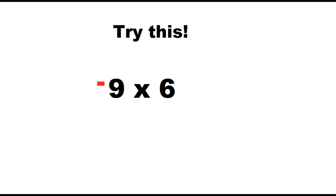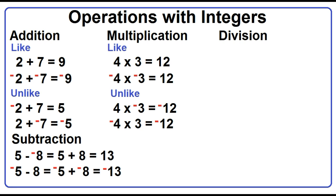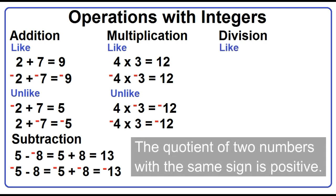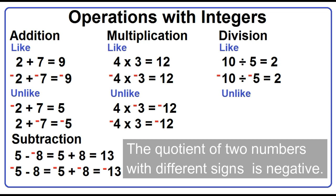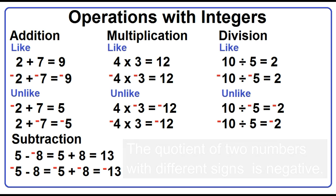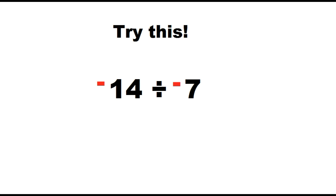Try this: negative 9 times 6. Division: the quotient of two numbers with the same sign is positive. Example: 10 divided by 5 is 2. Negative 10 divided by negative 5 is 2. The quotient of two numbers with different signs is negative. Example: 10 divided by negative 5 is negative 2. Negative 10 divided by 5 is negative 2. Try this: negative 14 divided by negative 7.